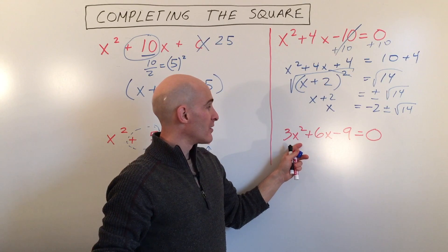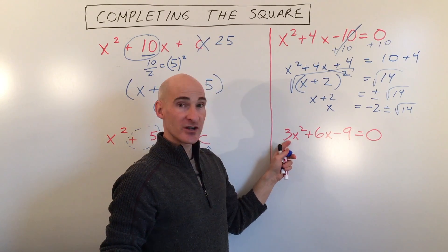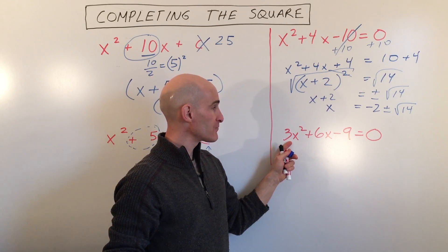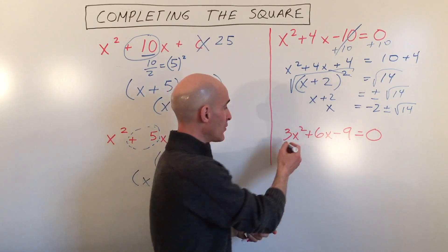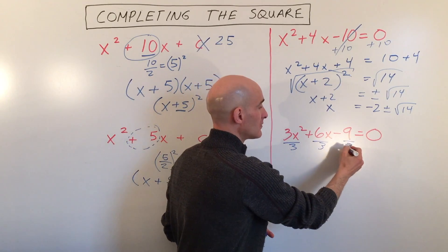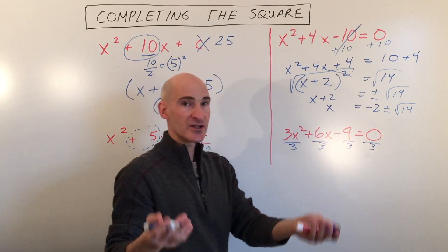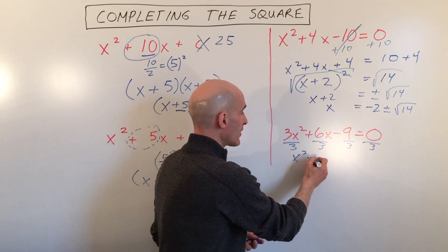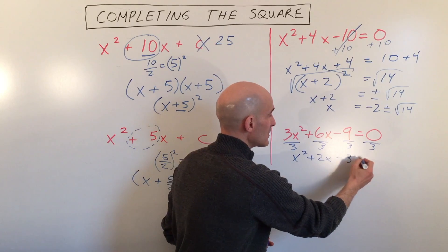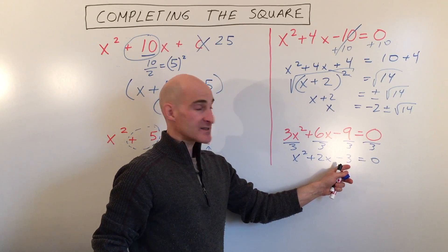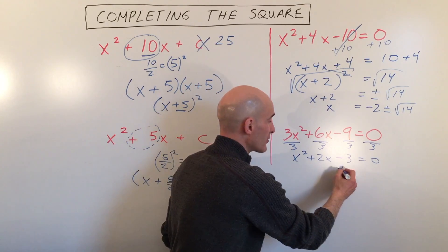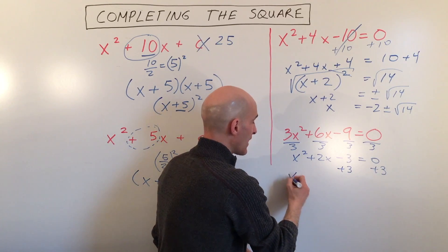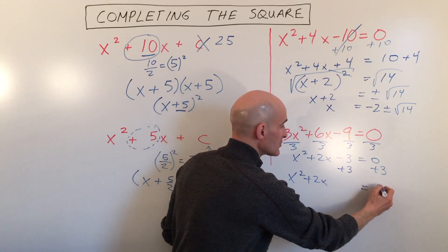Last example. What you're going to notice is that there's a coefficient in front of the x squared term — see the 3 there? It's easier to complete the square if this is just 1x squared, so let's divide everything in the equation by 3, keeping the equation balanced. So we get x squared plus 2x minus 3 equals 0. Now we want to move that constant to the other side, so I'm going to add 3 to both sides. Now we're down to x squared plus 2x equals 3.